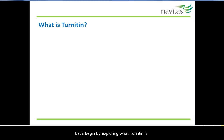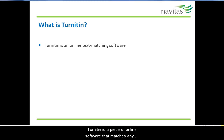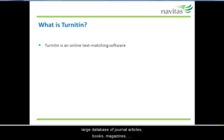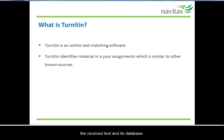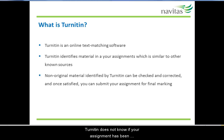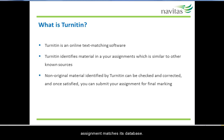Let's begin by exploring what Turnitin is. Turnitin is a piece of online software that matches any text it receives — for example, your assignment — to a very large database of journal articles, books, magazines, newspapers, websites and so forth. It then identifies any similarities it finds between the received text and its database. Turnitin does not know if your assignment has been referenced correctly or not, only that certain text in the assignment matches its database.